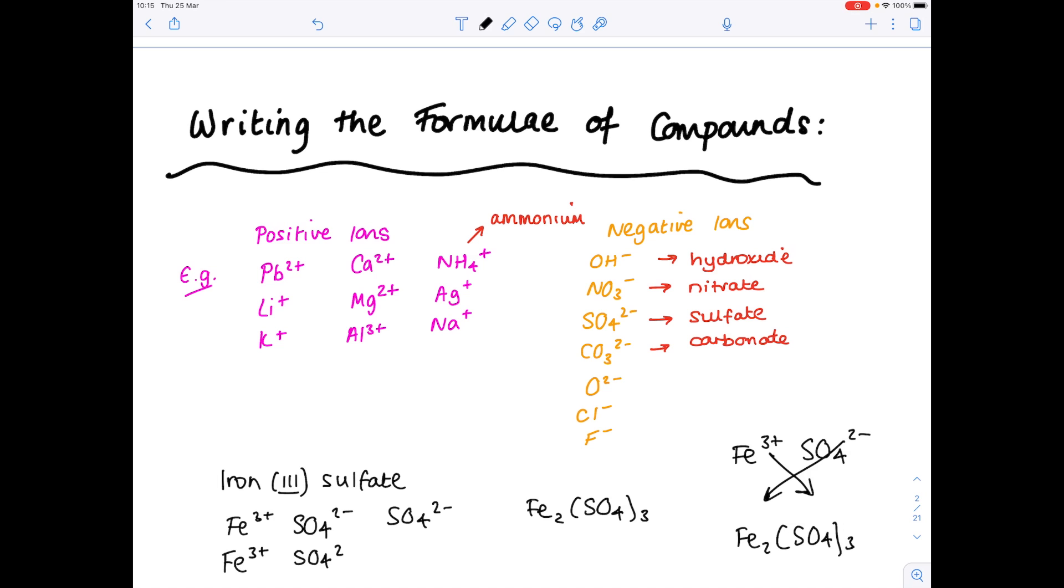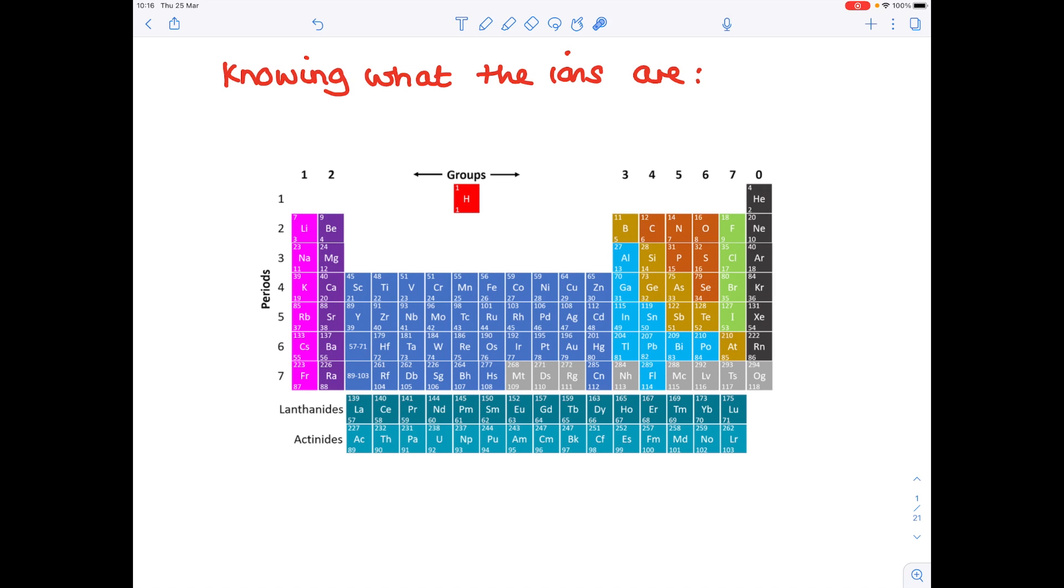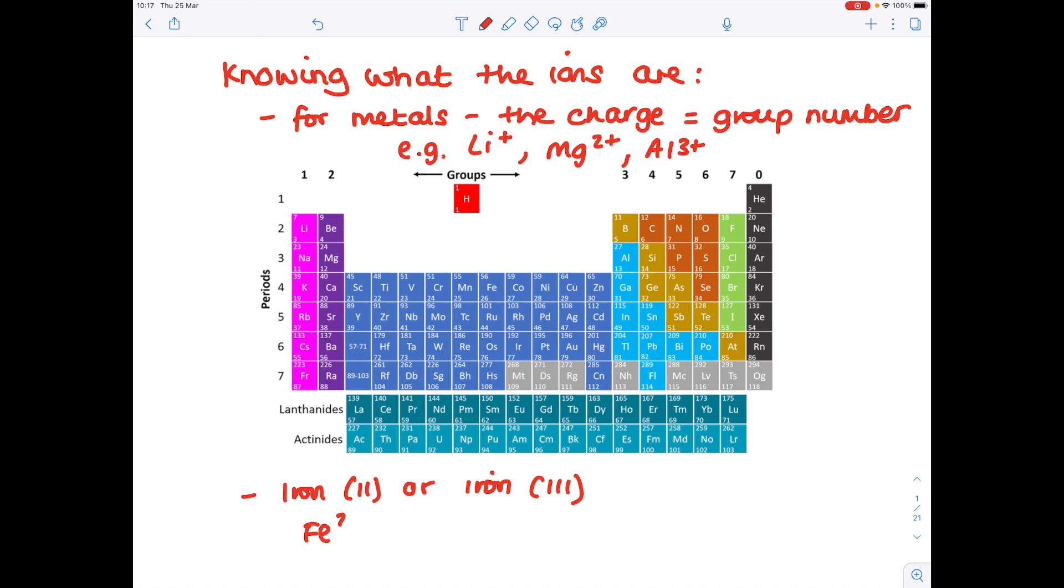But how do I know what the ions are? Because if you're doing a particular exam board which expects you to know the ions, then this is going to be quite a big job. And I'm going to show you how to do that now. Now that's quite straightforward for group 1, 2, and 3 metals. Because they're all metals, the charge is the same as the group number. So for the metals, the charge is the same as the group number and you just need to include a positive. So for example, lithium is in group 1, so it's Li+. Magnesium is in group 2, so that's Mg2+. Aluminium is in group 3, so that's Al3+. Some metals such as iron will have their charge given in the question. And that will tell you whether you're dealing with Fe2+ or Fe3+, so that's really nice.